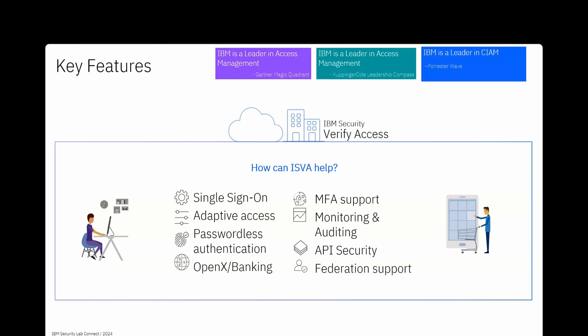Adaptive access is a security approach that dynamically adjusts access permissions based on various factors such as user behavior, context, and risk levels. Instead of relying on static access controls, the adaptive access system continuously monitors and analyzes user activities, device information, location data, and other contextual factors to determine the appropriate level of access. For example, if a user typically logs in from a specific location and suddenly attempts to access sensitive information from a different country or using an unfamiliar device, the adaptive access system may trigger additional authentication steps or even block access entirely until the user's identity is verified.